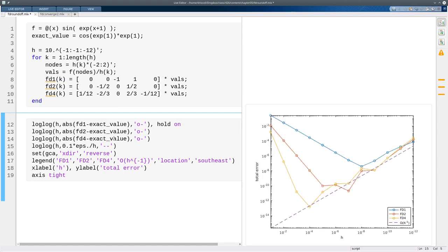And now if we plot the errors, we see something pretty interesting. So here's our first order formula doing its first order convergence. Here's the second order formula, and here's the fourth order formula. So for a while, they all converge according to the truncation error.